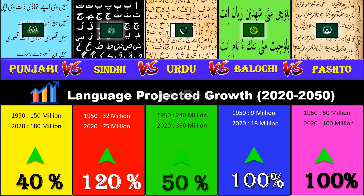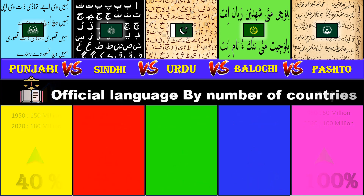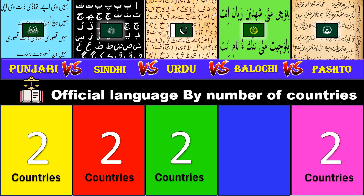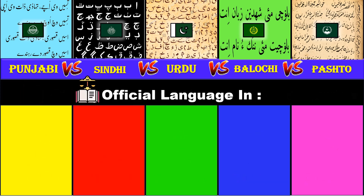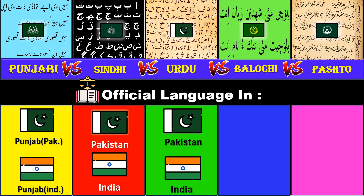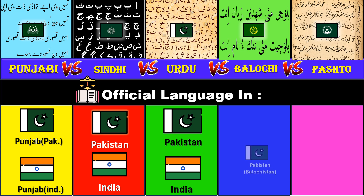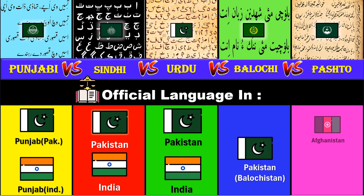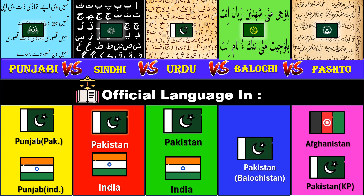Official language by number of countries. All languages except Balochi are official in two countries while Balochi is official in one. Punjabi, Sindhi and Urdu are official in India and Pakistan at provincial level, while Urdu is also the official language of Pakistan. Balochi is official in Pakistan while Pashto is official in Pakistan and Afghanistan.